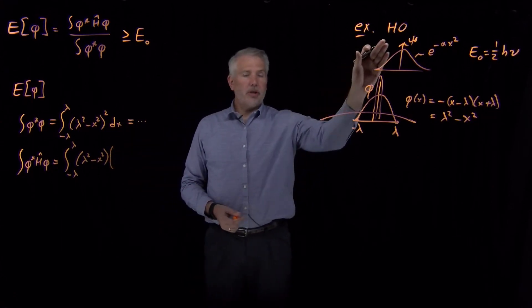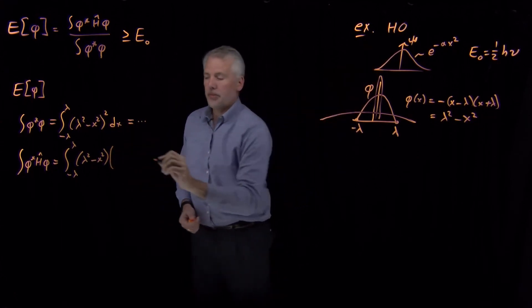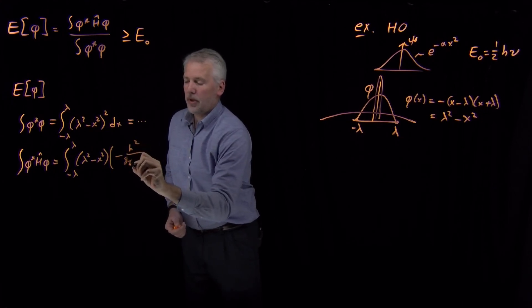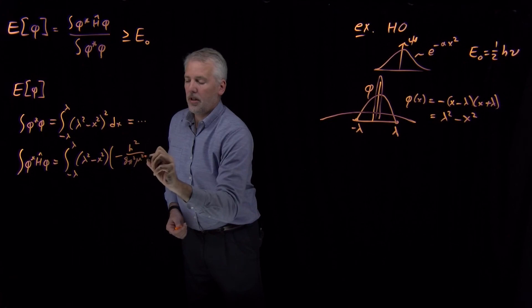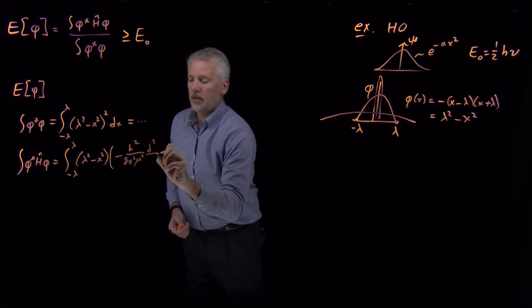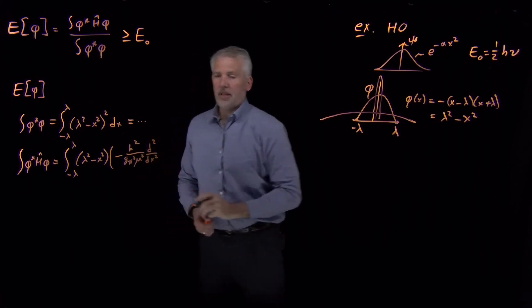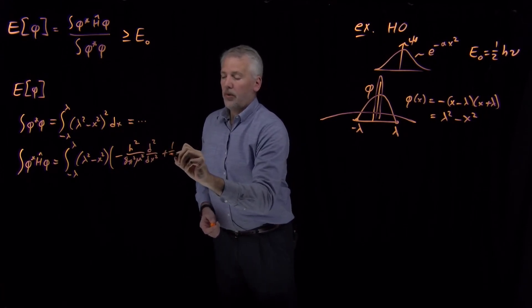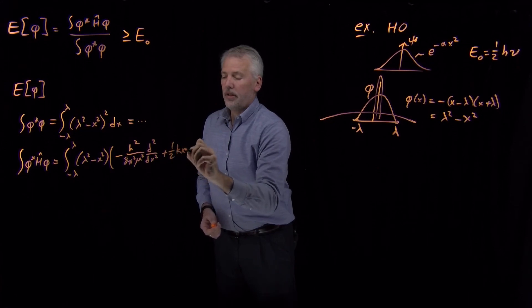I've got lambda squared minus x squared for psi star. The Hamiltonian, remember I need to use the Hamiltonian for the harmonic oscillator problem. That looked like a kinetic energy term, h squared over 8 pi squared mu squared second derivative.